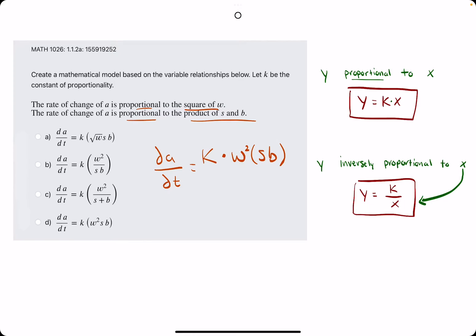Now we have dA over dt equals K, our constant, times W squared times S times B. Our best looking answer is option D. Break out the eraser, and we see that D is our correct answer.